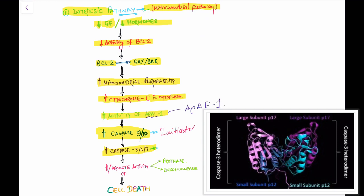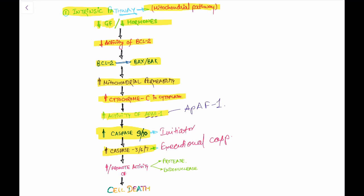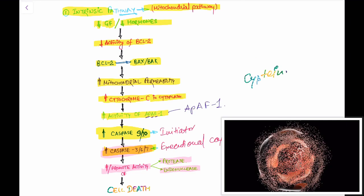These initiator caspases stimulate the activity of caspase 3, 6, and 7, which are executioner caspases. Caspases are cysteine-containing protease enzymes that act on proteins after aspartic acid residues. Activation of caspase 3, 6, and 7 leads to increased activity of proteases, which break down proteins, and endonucleases, which break down nucleic acids, ultimately leading to cell death.